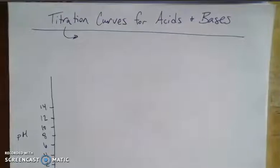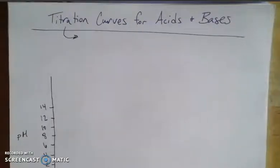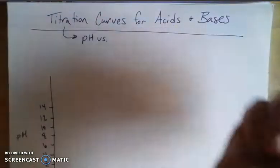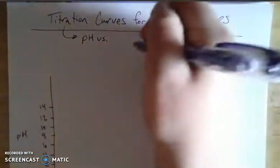A titration is a method that we use to determine the concentration of an unknown. We use a burette — it's a pretty common technique in chemistry. If you've taken a chemistry class then you've probably done a titration or two and experienced titration frustration. A titration curve gives you the pH versus the volume of the titrant that you're adding.